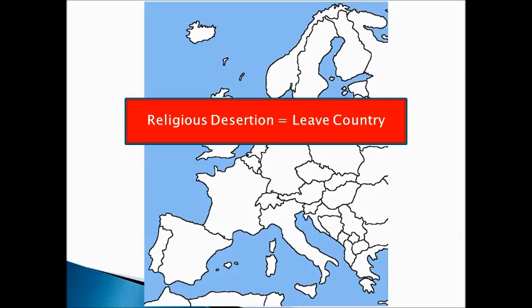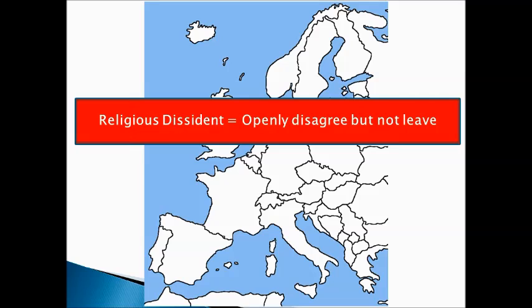Because of the Peace of Augsburg, we get two terms. First, religious desertion — people left their country because if they were Catholic in a Protestant country, they would leave to go somewhere they could practice their faith, or vice versa. The other group are called religious dissidents — people who decided to stay in their country and openly disagree with the religion of their nation. For example, you might be Protestant in Spain and openly disagree with not being allowed to practice your Protestant faith there.